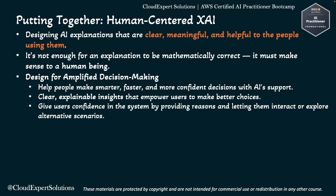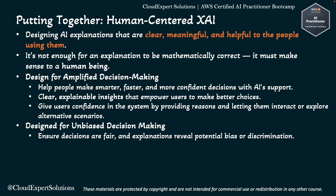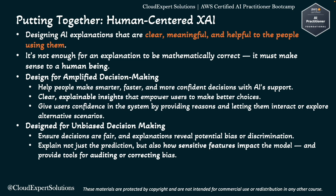It also provides user confidence in the system by giving reasons and letting them interact or explore alternative scenarios. The second principle is Design for Unbiased Decision Making, which ensures decisions are fair and explanations reveal potential bias or discrimination. For example, if a loan denial is driven by zip code and that zip code correlates with race or a certain demography, this could be a proxy for discrimination. A human reviewer or compliance officer can spot and correct the bias. Under Human-Centered Design, the model explains not just the prediction, but also how sensitive features impact the model, and provides tools for auditing or correcting bias.